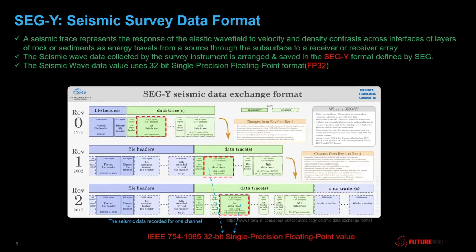The seismic survey data is stored in a format called SEGY format. The most commonly used data value format for the data trace — for example, the sound signal amplitude or strength — is IEEE FP32. The coordinate and the time step in the trace also use FP32. So basically, the key part of seismic data processing is FP32 single-precision floating-point intensive operation.